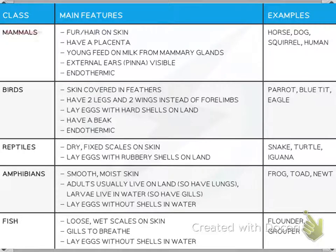Mammals have hair on skin, a placenta, young that feed on milk from mammary glands, external ears, and are endothermic. Examples include horses and dogs.